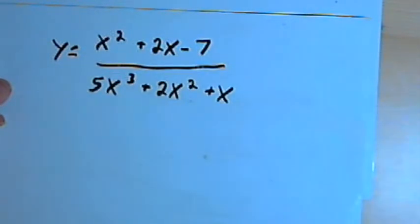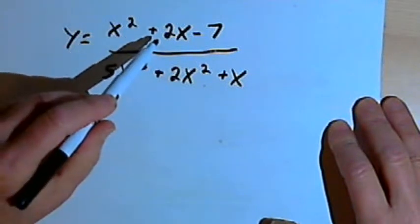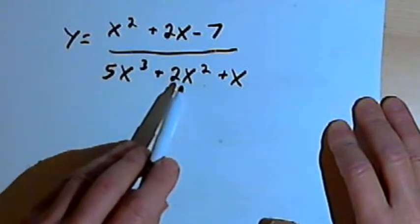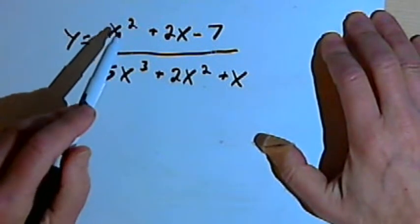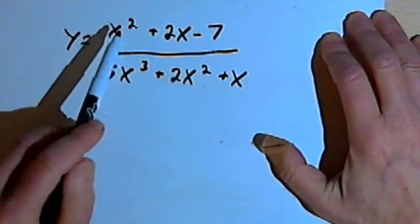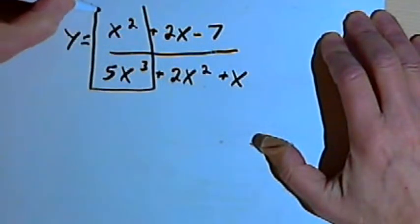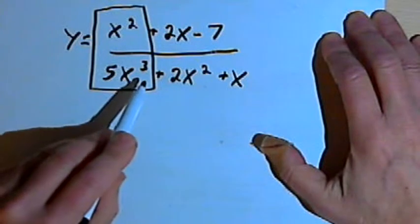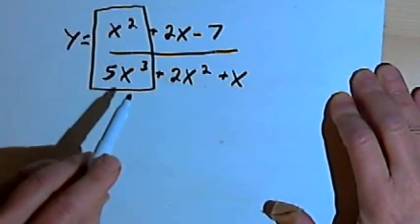Let's look at a bunch of examples and see how these rules apply. Here I've got y equals x squared plus 2x minus 7, and that's over 5x to the third plus 2x squared plus x. We're always going to be concerned with the degree of the polynomial in the numerator and the denominator — usually that will be the first term in each. I'll put a little box around those first terms. The degree in the numerator is 2 — there's an x squared — and the degree in the denominator is 3, that's 5x to the third.